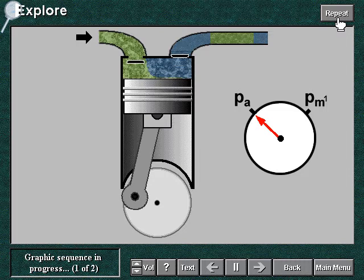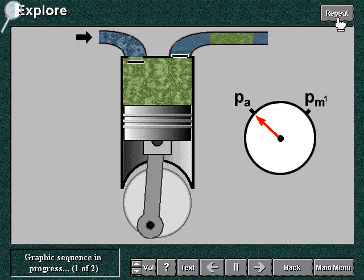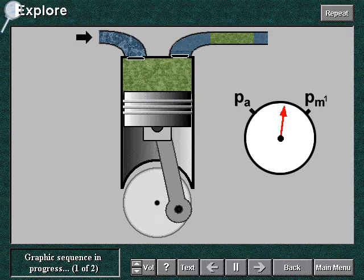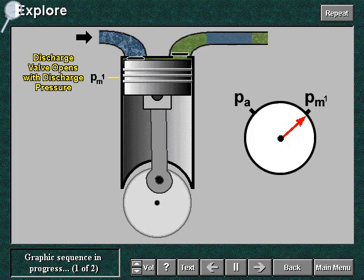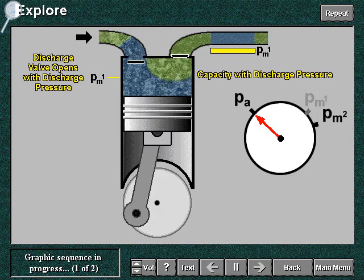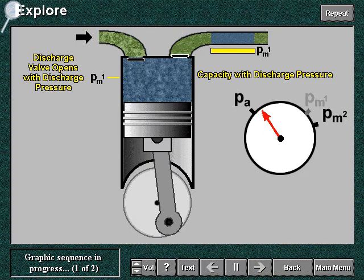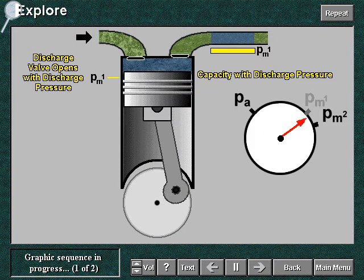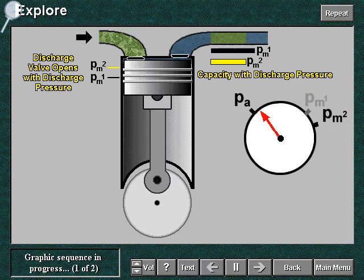Consider now a single stage compressor. If a higher delivery pressure happens, the compression ratio is increased and volumetric efficiency decreases. Less gas is delivered to the user and the compressor capacity is decreased.